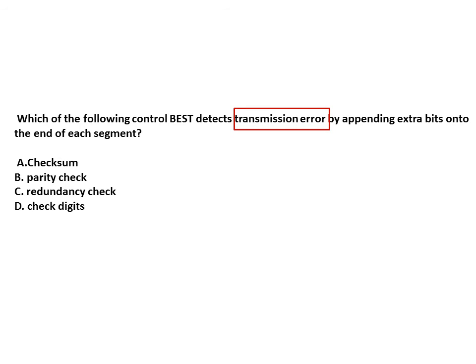Next question: which of the following controls best detects transmission errors by appending extra bits onto the end of each segment? Our objective is to detect transmission errors, so the answer should be CRC, checksum, or parity. Given the preference order, and since CRC stands for Cyclic Redundancy Check, our answer will be CRC — that is, cyclic redundancy check.